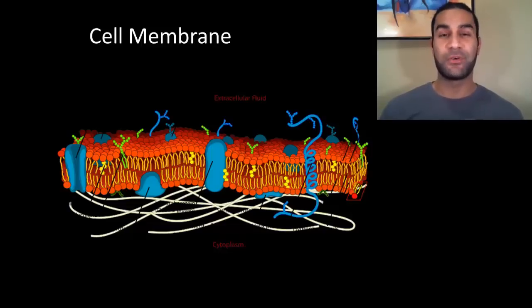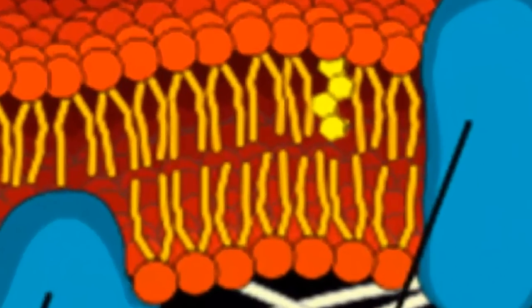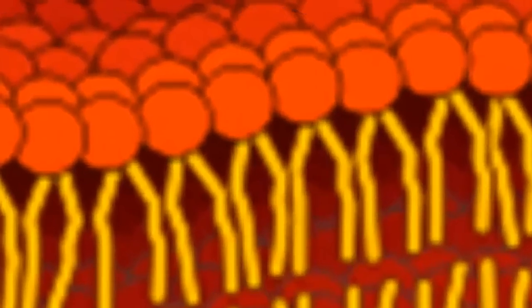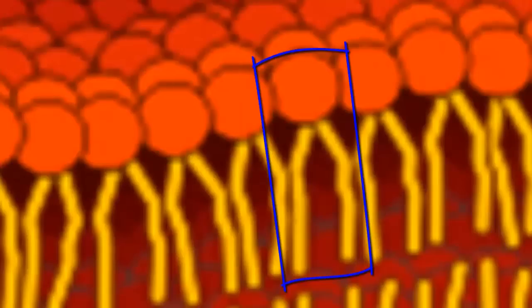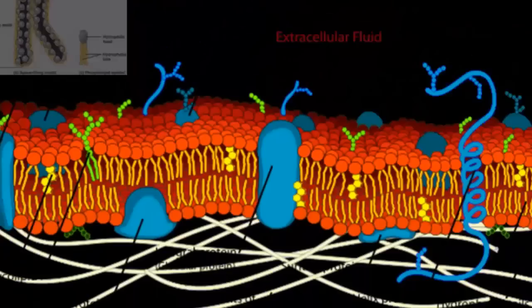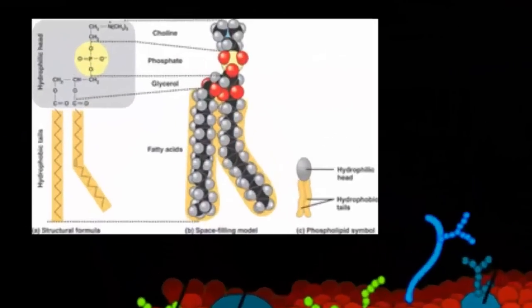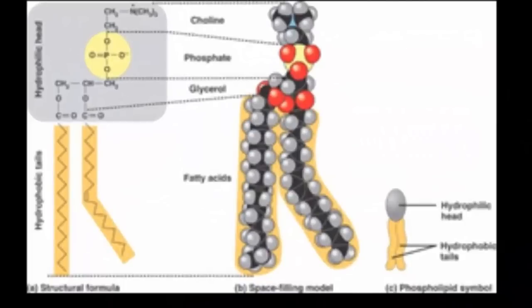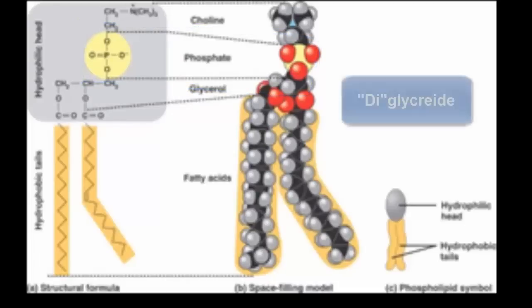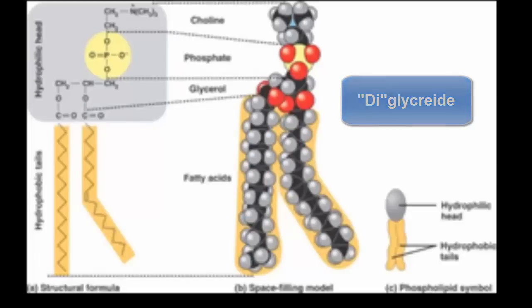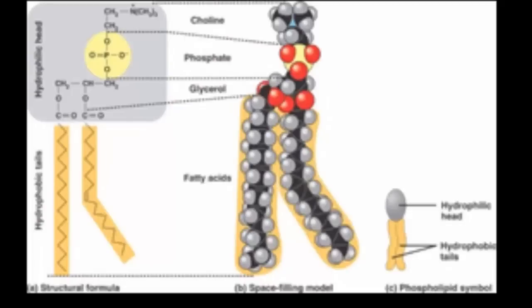The lipids are the squiggly lines in between. You'll notice there are two different layers facing in opposite directions — these structures are called phospholipids. A phospholipid is made of some things that should be very familiar: there is a phosphate group, one of the major functional groups, and this is actually what we consider a diglyceride. You remember triglycerides with three fatty acids extending from a glycerol backbone — this is a diglyceride, with a glycerol structure and two fatty acid extensions.